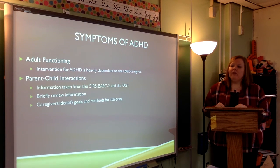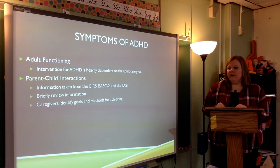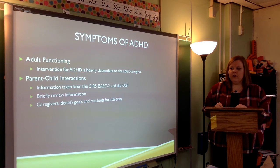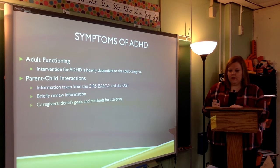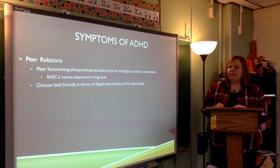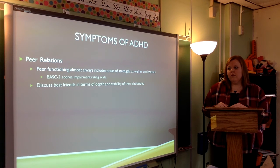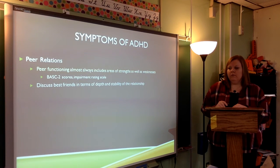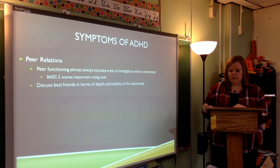The adult functioning portion is also a key element, as the intervention for ADHD is heavily dependent on the adult caregiver and parent-child interactions. Information taken from the CIRS, the BASC-2, and the FAST helps to better understand those interactions and for caregivers to identify goals and methods for achieving the overall goal. Peer relations are also an important area — peer functioning almost always includes areas of strength as well as weakness. BASC-2 scores and the impairment rating scale give an indication of peer relations, and discussing best friends in terms of depth and stability of the relationship is also a good way to assess peer relations.